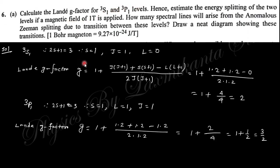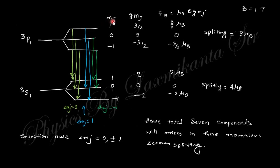Calculate the energy splitting for two levels and find the number of spectral lines in anomalous Zeeman splitting for a magnetic field of 1 Tesla. For the ³S₁ state, 2S+1=3, S=1, J=1, L=0; for the other level, L=1, J=1. Computing the Landé g-factors gives g=2 and g=3/2. The mJ values range from −1 to 1 for both levels. From the resulting energy separations and selection rules, a total of 7 spectral lines arise.